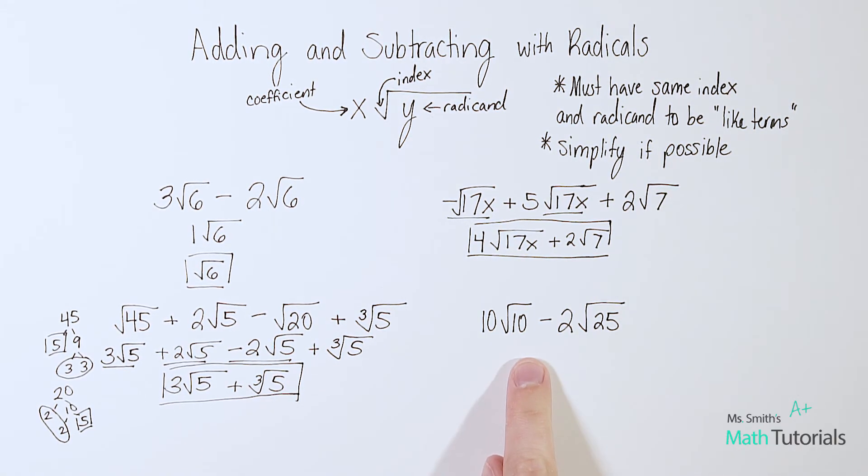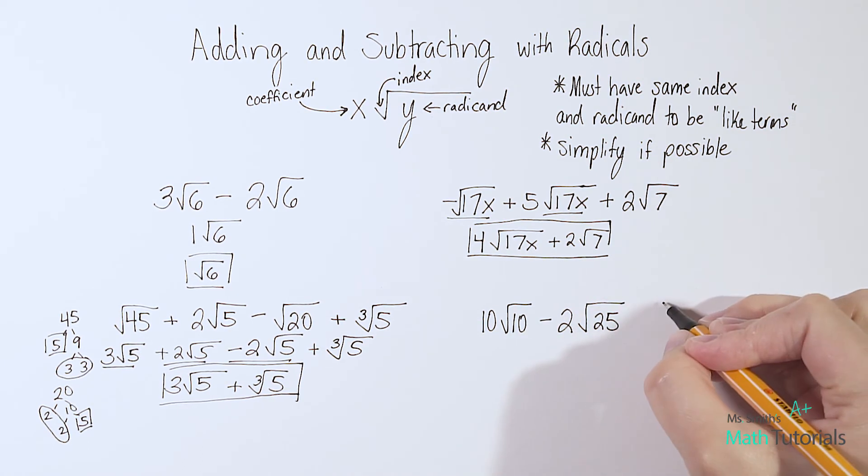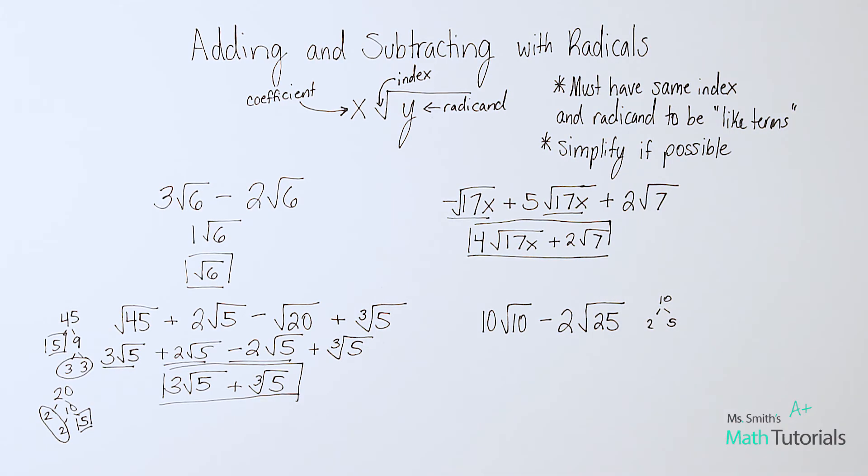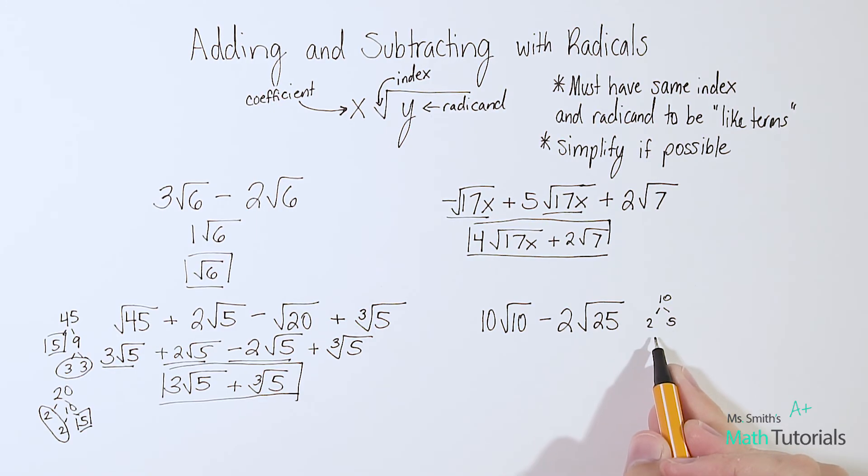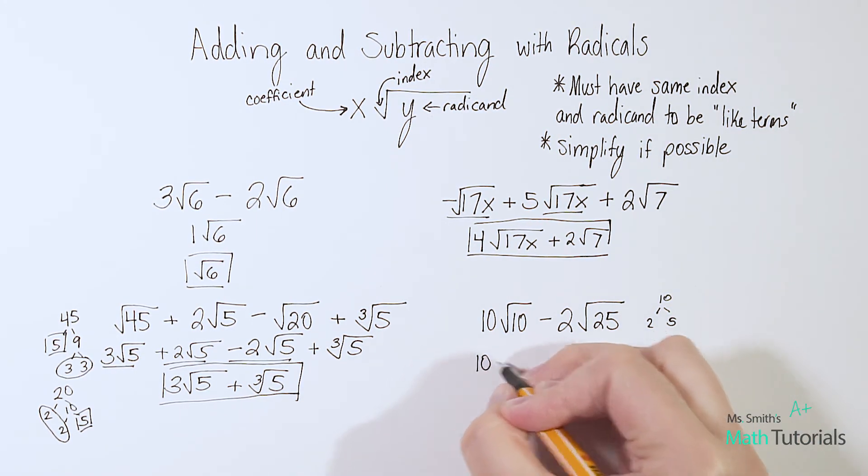Let's do this last example. So I've got 10√10. Let's try to break 10 down. What's interesting is if you try to do it, the only thing you can pull out is two and five. I can't break either of those down anymore. I don't have any pairs, which means 10 is as low as it goes. Nothing I can do here.